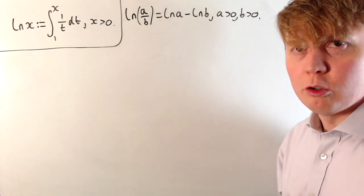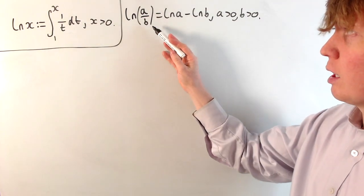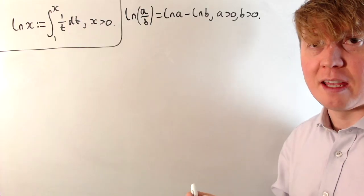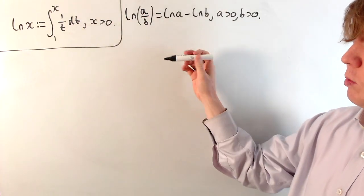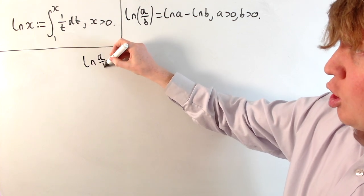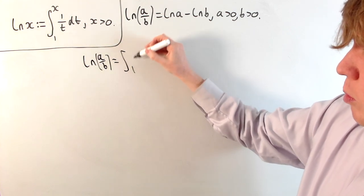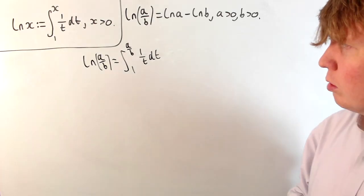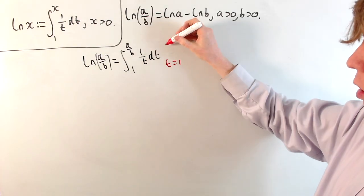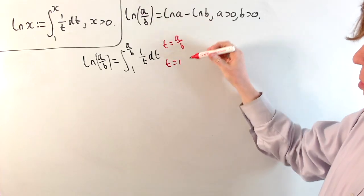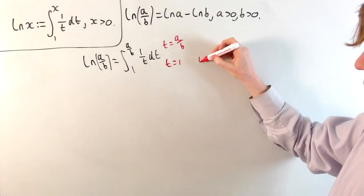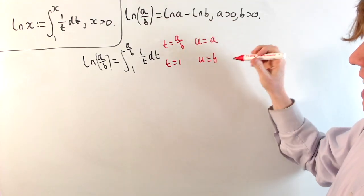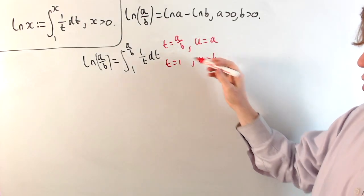Now let's do the next law of logarithms: the log of a division can be split into log(a) minus log(b), for all positive values of a and b. Starting with the left-hand side, ln(a/b) is defined as the integral from 1 up to a/b of 1 over t dt. We're going to do a substitution: our limits are t = 1 and t = a/b. Multiplying each by b, u would go from b up to a. So the substitution is u = bt, which we write as t = u/b.